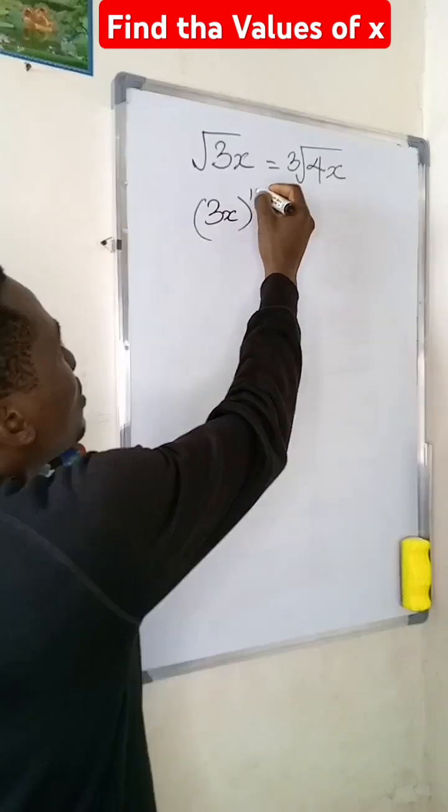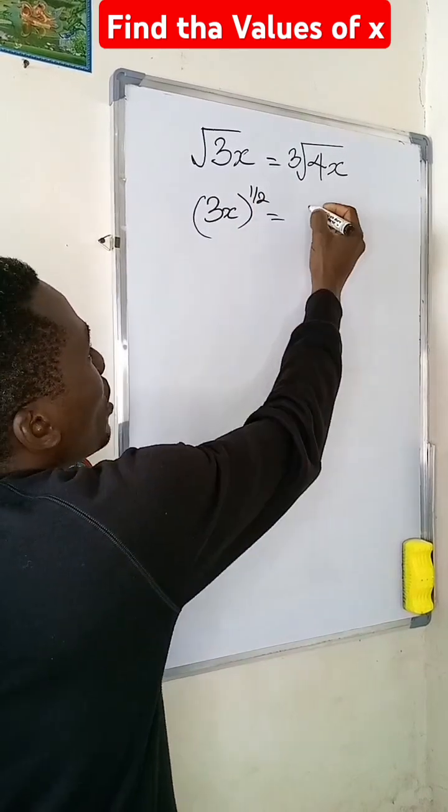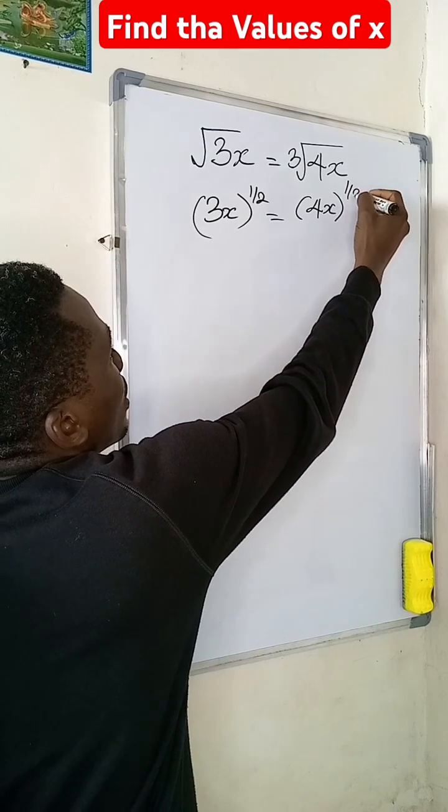We multiply 3x to the power of 1 divided by 2. According to indices, this would be 4x to the power of 1 divided by 3.